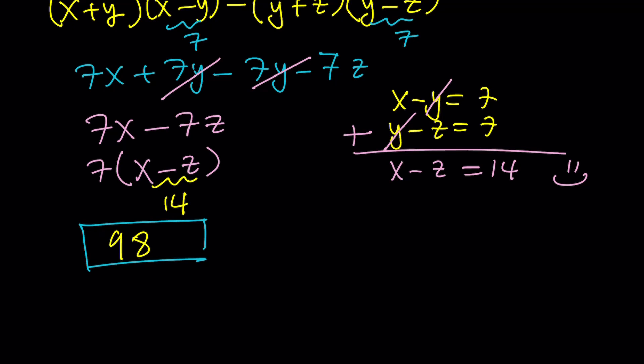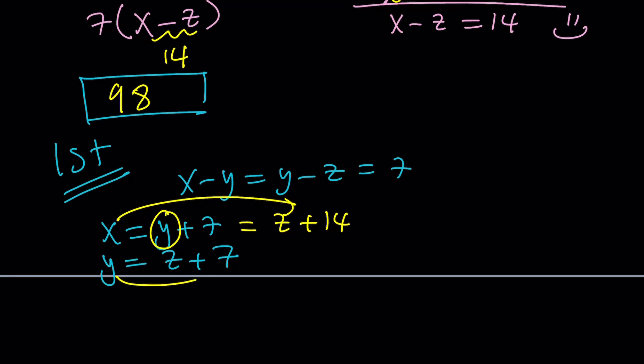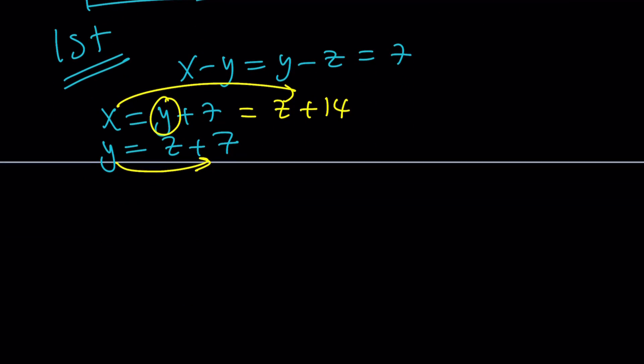Let's see if we can find something similar with the first method. Because we did the second method first, we're going to do the first method second. We have x minus y equals y minus z equals 7. From here, I get x equals y plus 7 and y equals z plus 7. But because y is z plus 7, I can replace this y with z plus 7. From here, I get x in terms of z and y in terms of z, which is something that I wanted.